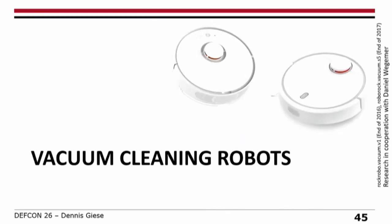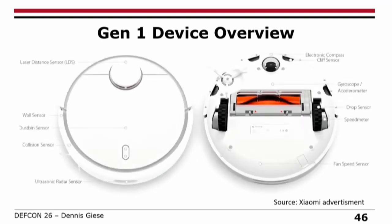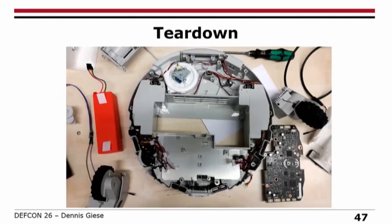Let's move to the hardest device — the vacuum cleaning robots. For Generation 1, Danny Wigemer and I published at the Chaos Communication Congress in December 2017. To give an overview: Generation 1 has a LiDAR sensor — the laser thing to measure the room — plus infrared sensors, ultrasonic sensors, a gyroscope, and an accelerometer. It's basically a smartphone with wheels and a vacuum function. It's very nice to tear down — no weird connectors that can break, all parts are drop-in parts, and the devices are well-engineered.